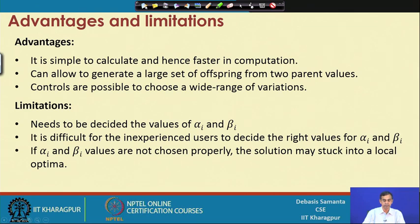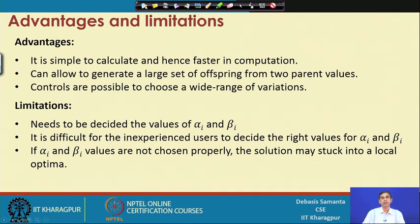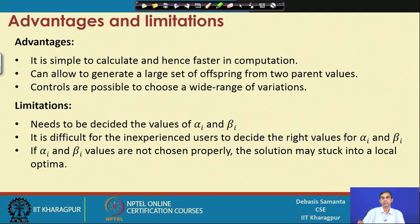However, it has certain limitations. The first limitation is that the programmer must decide the values of alpha and beta, which is really a headache. For an inexperienced programmer, deciding the right values is a tedious job. More seriously, if the values are not chosen properly, the solution produced may lead to premature convergence or getting stuck in a local optimum. So the solution may not always be optimal with this technique.